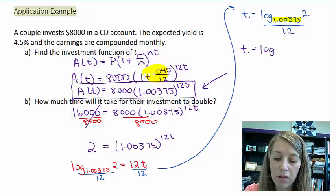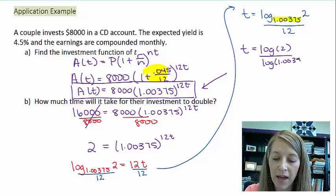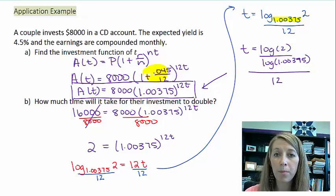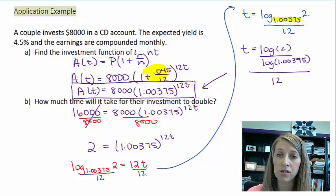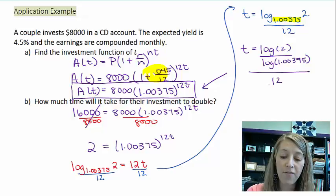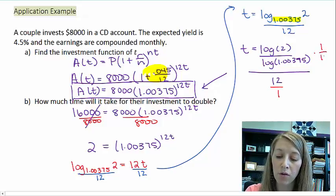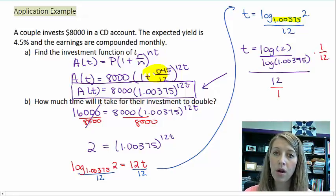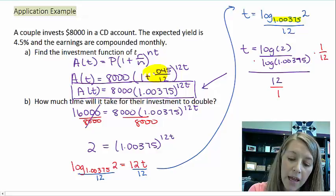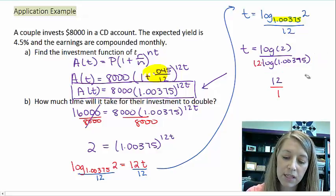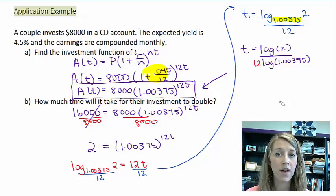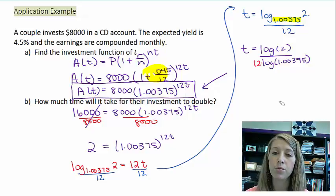That will give me log of 2 divided by log of 1.00375. Technically, that is still all over 12. But that gives us a complex fraction. If I have a fraction within a fraction, I just multiply by the reciprocal. I'm going to multiply my top fraction by the reciprocal of 12 over 1, which gives me 1 over 12. So I have t equals log of 2 divided by 12 times log of 1.00375.